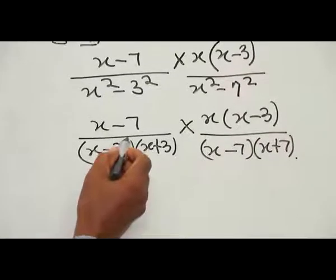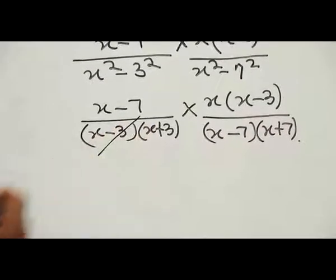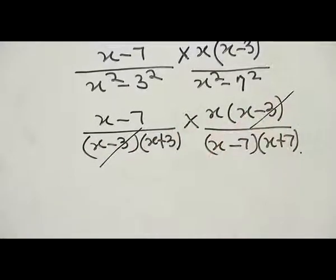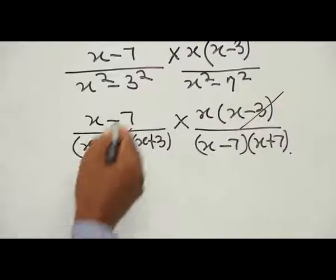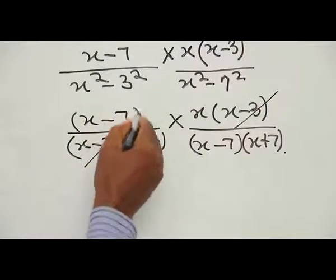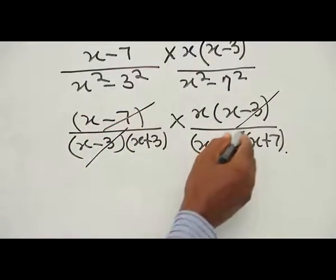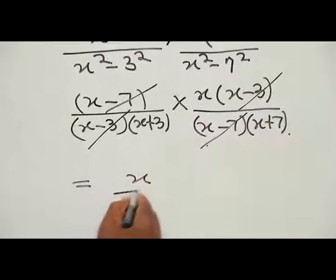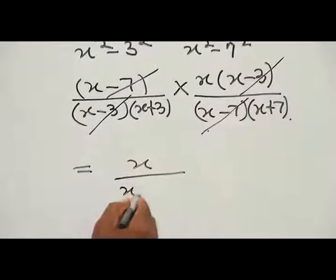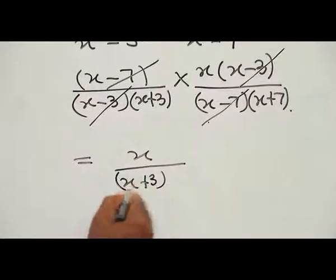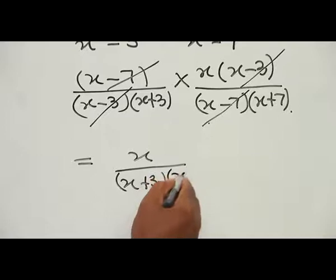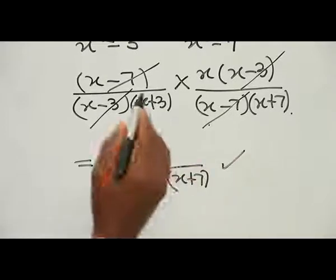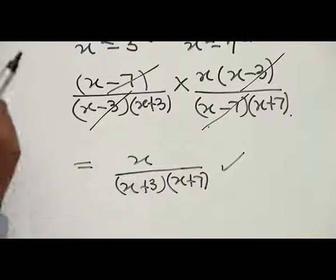We notice that S minus 3 and S minus 3 cancel. Then S minus 7 and S minus 7 also cancel. At the numerator, only S remains. At the denominator, we have S plus 3 multiplied by S plus 7. This is the simplification of the given expression.